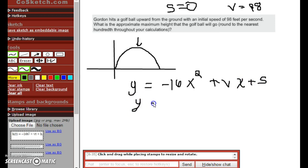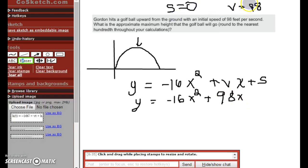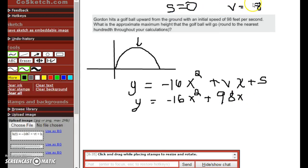So y = -16x² plus our initial velocity, which is 98x. And our initial height is zero. So I'm just going to make this a better nine, because it's just driving me crazy. I'll try my best. There we go. So now we're going to plug this into GeoGebra, and we're going to find the maximum height. Let me show you how to do that.